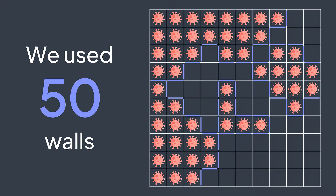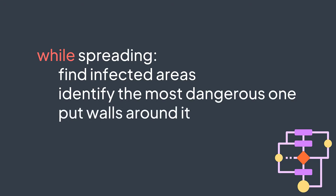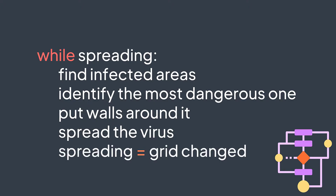Let's think about the solution. The positive point with this problem is that from the description we can clearly deduce the steps of the algorithm, but the negative point is that the implementation can be tricky. We have an initial grid of ones and zeros; then while the virus is still spreading, we find the infected areas, identify the most dangerous one, put walls around it, and spread the virus. To check if the virus is still spreading, we check if the grid changes the next day.